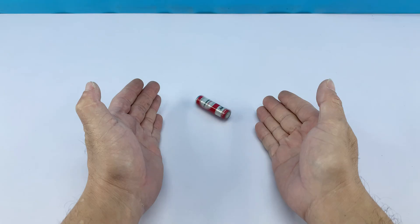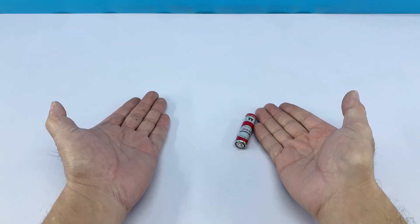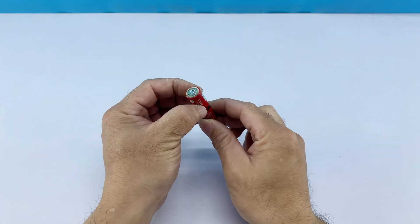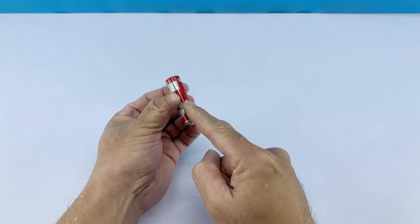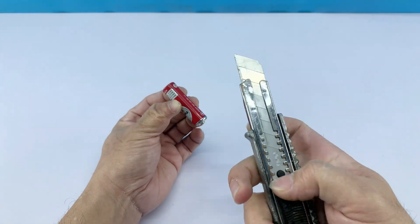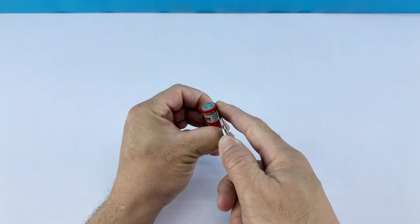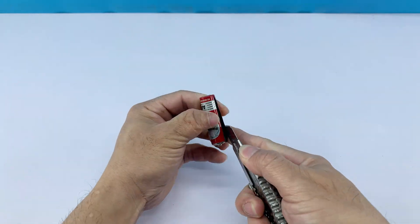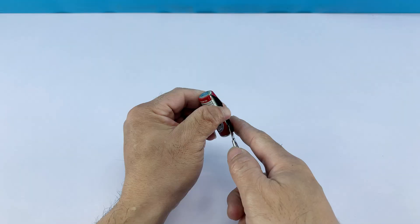For the actual heating element, I'm going to use a carbon rod extracted from an old battery. Carbon is an excellent choice for this due to its electrical conductivity and its ability to generate significant heat when current passes through it. I'll carefully cut open the battery and retrieve the carbon rod from inside.